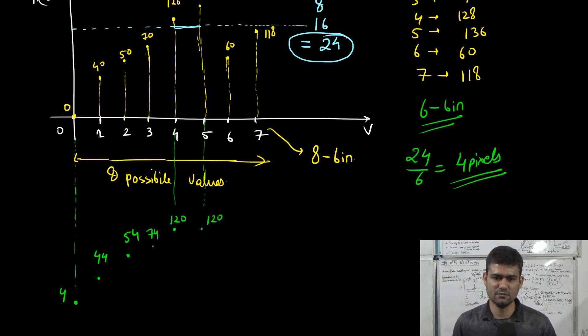Likewise, in bin number 7, corresponding to the gray level value 6, we will have 64 pixels. And now something interesting happens in the last bin corresponding to gray level value 7.